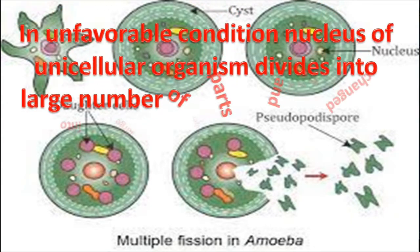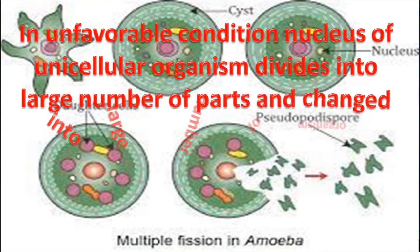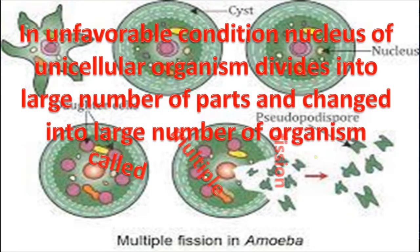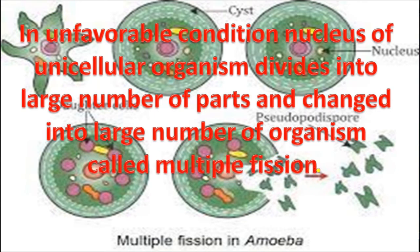In unfavorable conditions, the nucleus of unicellular organisms divides into a large number of parts and changes into a large number of organisms, called multiple fission. In this process, the nucleus is surrounded by a protective layer called a cyst. Inside the cyst, the nucleus divides into a large number of nuclei, and in unfavorable conditions the cyst ruptures.